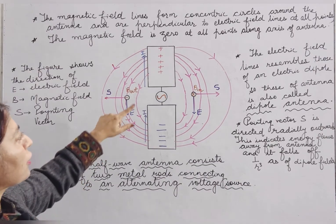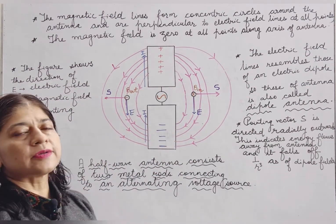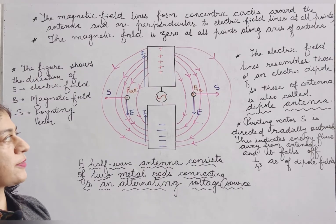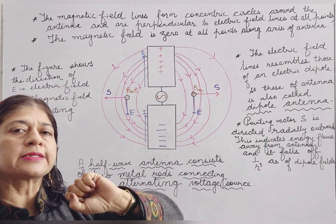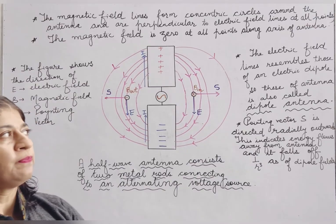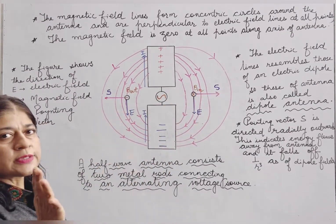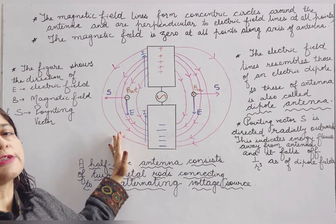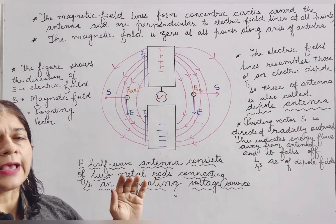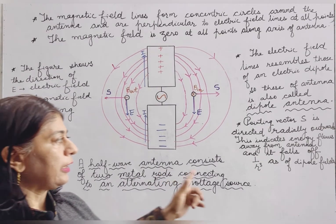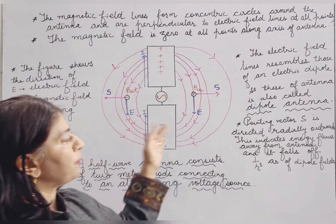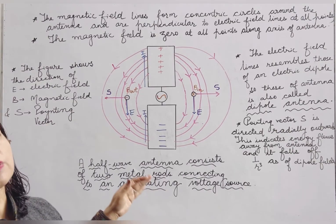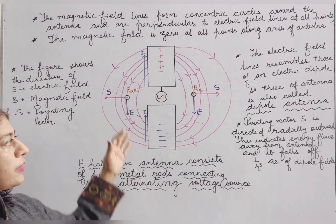The electric field lines formed here resemble dipole fields. Because of this reason, half-wave antennas are also called dipole antennas. S, the Poynting vector, indicates the amount of energy of electromagnetic radiation produced. Since they are in the outward direction, it shows that energy is radiating outward. These fields are dipole fields, which is why they fall off gradually in the radial direction as 1/r³.